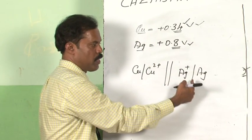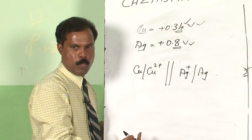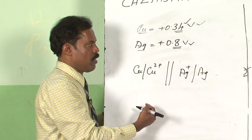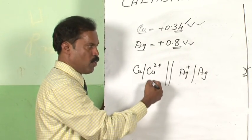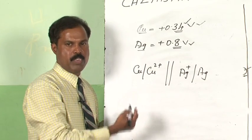So, obviously, silver should get reduced. Same way you can find out how a cell can be set up between different couples.